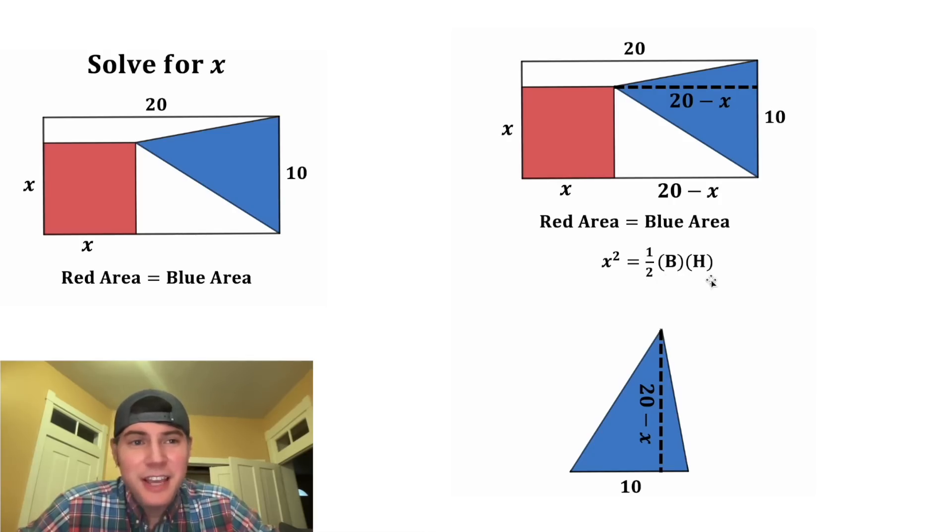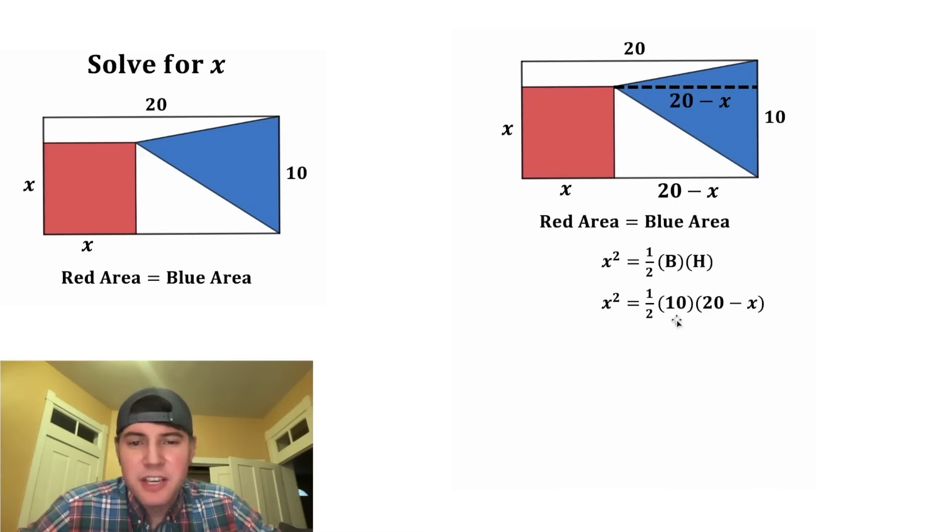So now we can fill in for the base and the height. The base is equal to 10, and the height is equal to 20 minus x. Next, we can do one half times 10, which is equal to five. And this five will distribute to the 20 and the negative x. Five times 20 is 100, and five times negative x is negative 5x.